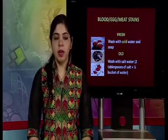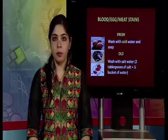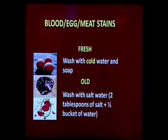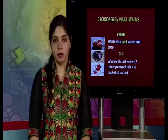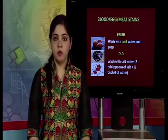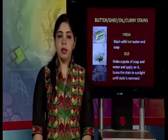Protein stains include milk, egg, meat, and blood. If the stain is fresh, wash with cold water and soap. If the stain is old, wash with salt water — use two tablespoons of salt in half a bucket of water. This method can be used for colored cottons, for woolen and silk, and for synthetic fabrics like nylon, polyester, and acrylic.